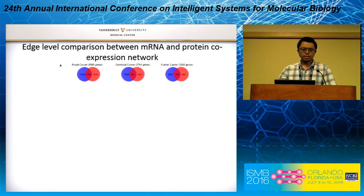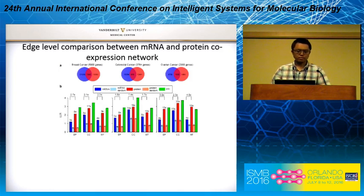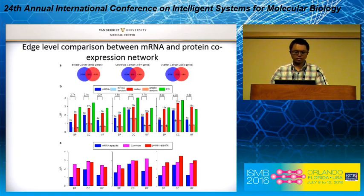First, we performed edge-level comparison between mRNA and protein co-expression networks. We found the edge overlap between the networks across three cancer types is very low. We also found that the protein co-expression network has a much higher log likelihood ratio than the mRNA co-expression network, and that mRNA-specific edges have the lowest log likelihood ratio. All these results indicate that protein co-expression networks are highly functionally relevant.